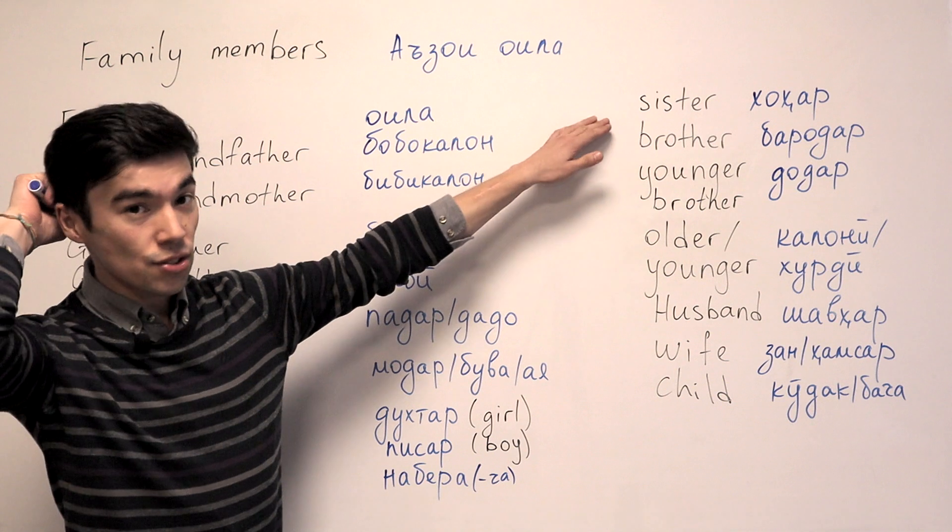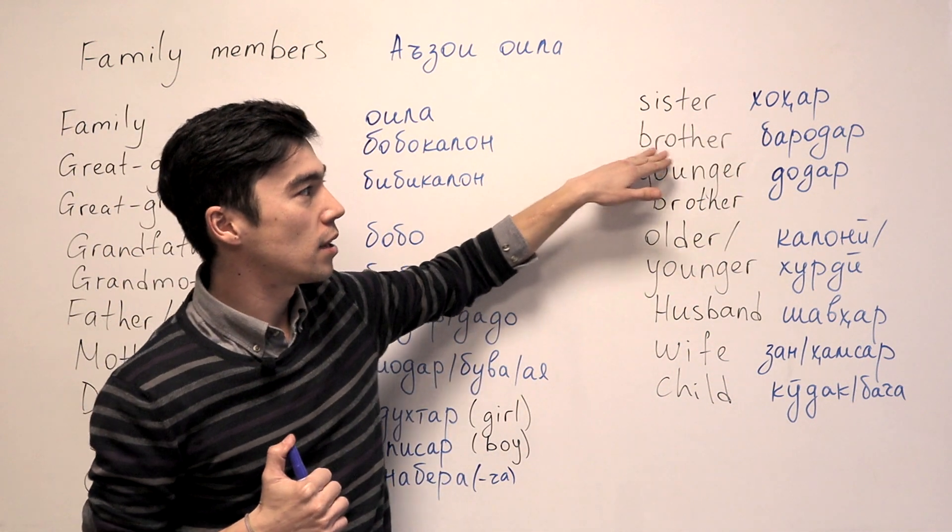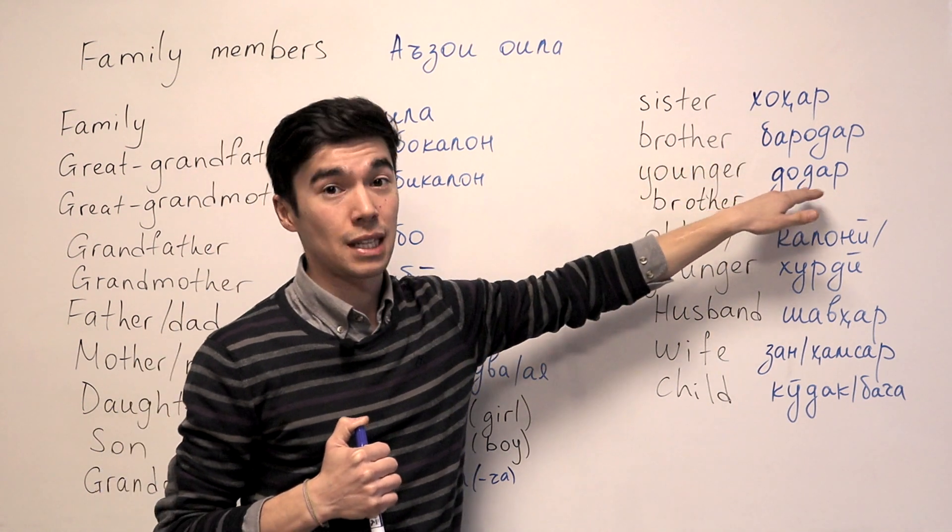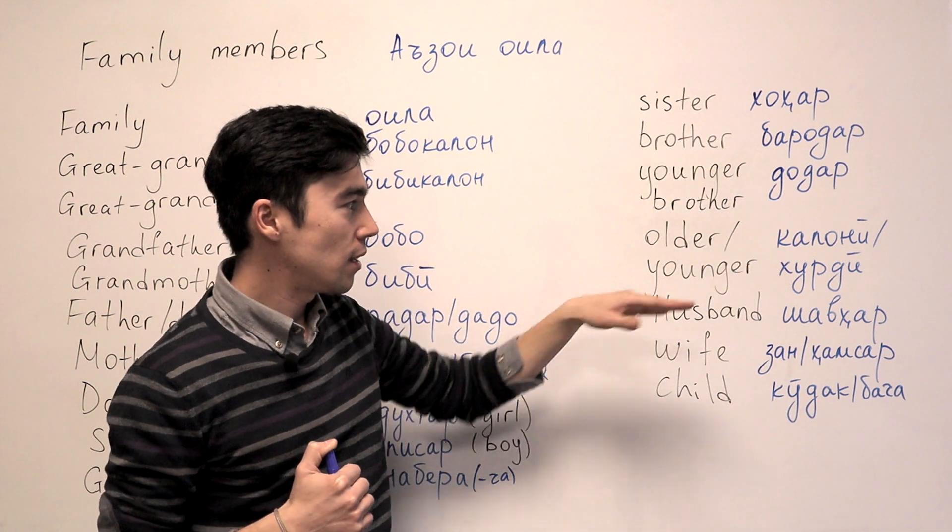Alright. And sister, sister would be Khohar. Brother, Barodar. And for younger brother, we have the word Dodar. But for younger sister, we don't have that word. We just say here.